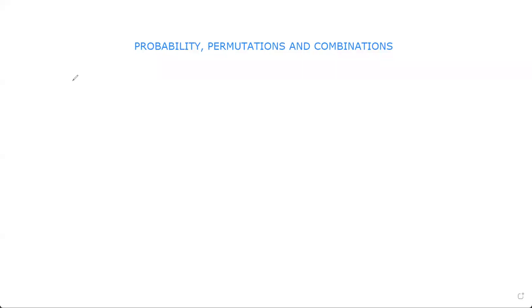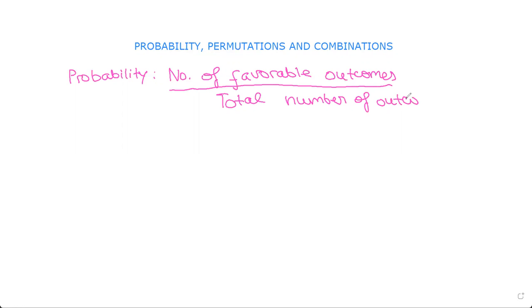So now let's look at the formula for probability. The formula is the number of favorable outcomes divided by total number of outcomes. This is the formula you have to know, and it's quite straightforward.